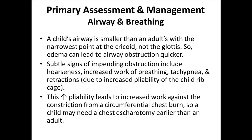Remember, a child's airway is smaller than an adult's with the narrowest point at the cricoid, not the glottis, so any edema can lead to an airway obstruction quicker. A child shows subtle signs of impending obstruction, including hoarseness, increased work of breathing, tachypnea, and retractions due to increased pliability of the child's ribcage. This increased pliability leads to increased work against the constriction from a circumferential chest burn, so a child may need a chest escharotomy earlier than an adult.